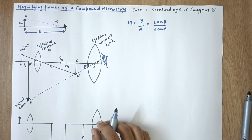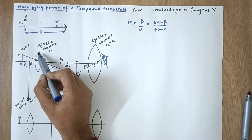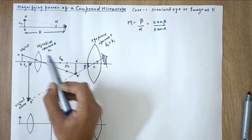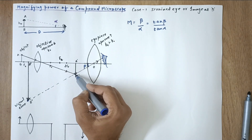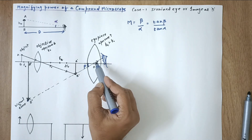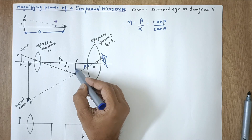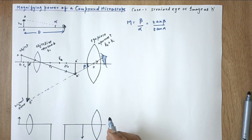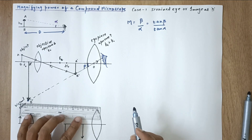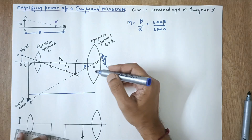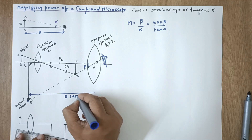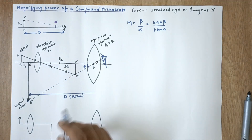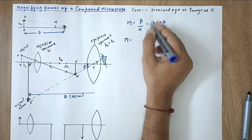Let's recap: the object is placed slightly behind the focus of the objective. Its real and inverted image forms beyond 2f. The rays continue to hit the eyepiece, and since the image is between O and f of the eyepiece, a virtual and erect final image is formed. For case one, we assume the final image is formed at D = 25 cm from the eye or the lens, since they are very close together.